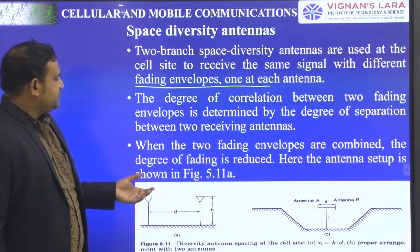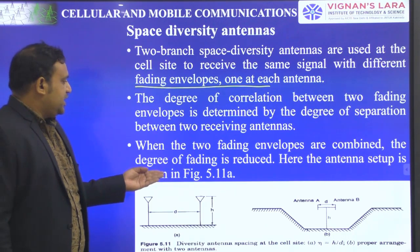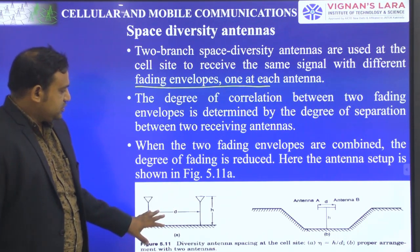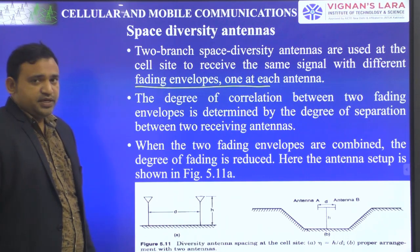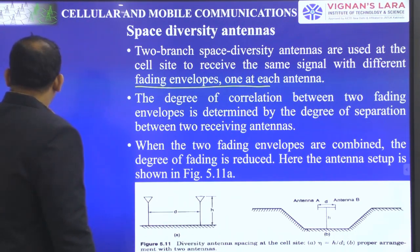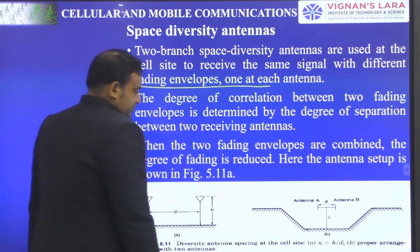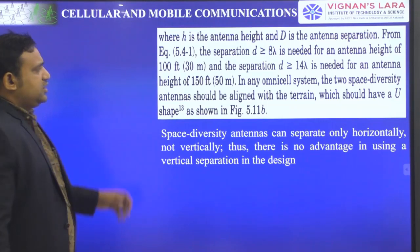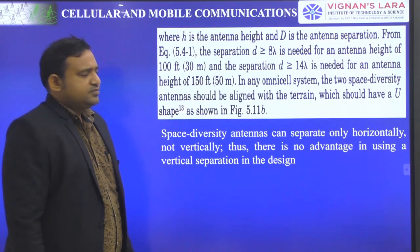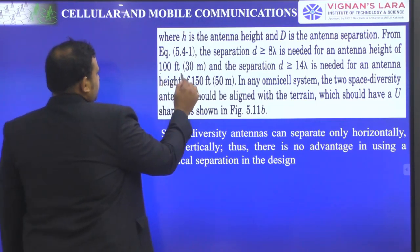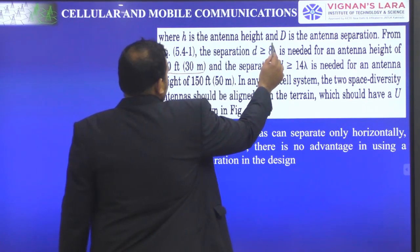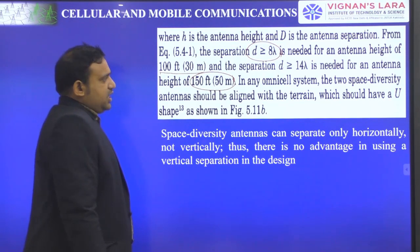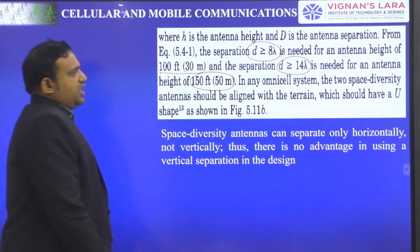When the two fading envelopes are combined, the degree of fading is reduced. The antenna setup is shown in figure 5.11A, where two antennas are separated at a distance D. The formula for diversity antenna spacing at the cell site is equal to H divided by D, where H is the antenna height and D is the antenna separation. If the antenna height is 100 feet, the separation must be greater than or equal to 8 lambda. If the antenna height is 150 feet, that is 50 meters, the separation must be greater than or equal to 14 lambda.